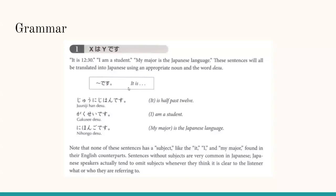Something desu means it is something. Juuni-ji han desu means it is half past 12. Gakusei desu means I am a student. Nihongo desu means my major is the Japanese language. Note that none of these statements has a subject like it, I, and my major found in the English counterparts. Sentences without subjects are very common in Japanese. Japanese speakers actually tend to omit subjects whenever they think it is clear to the listener what or who they are referring to.